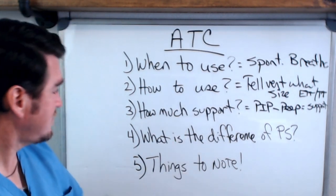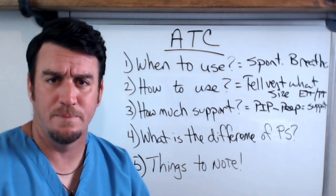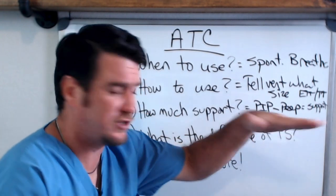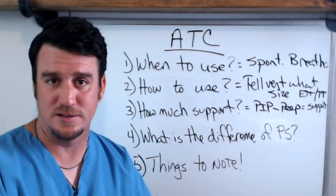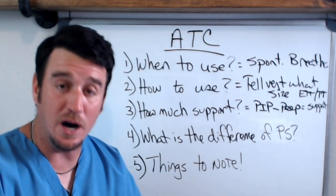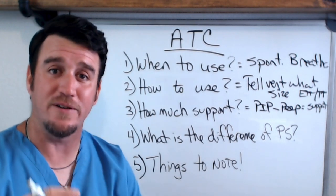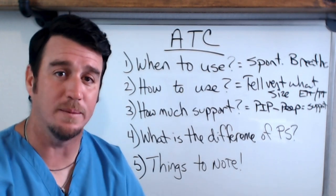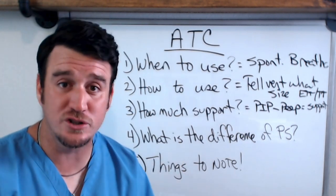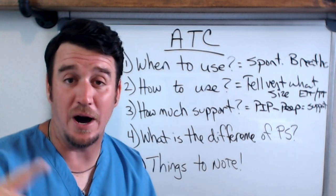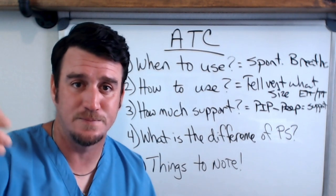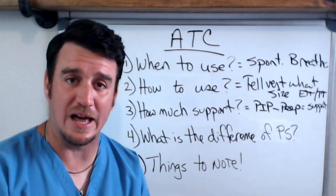Another question I get is: what's the difference between ATC and pressure support? ATC takes into account the artificial airway and provides just enough support to overcome the calculated resistance of that airway. Pressure support just tells the vent: upon inspiration, increase the pressure by this set amount and then cycle off and allow for exhalation.